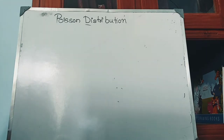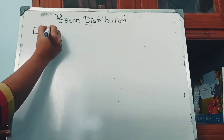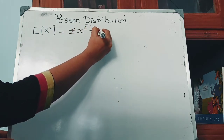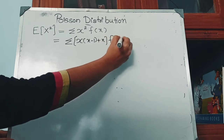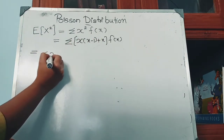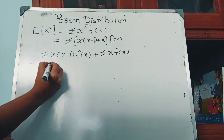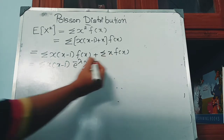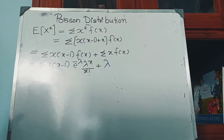Now we will find the variance of the Poisson distribution. We know that variance equals E[X²] − (E[X])². Before finding variance, we find the second order moment E[X²] = sigma of x²·f(x). We write x² as x(x−1) + x for simplicity, so E[X²] = sigma x(x−1)·f(x) + sigma x·f(x). The second term is the mean of the Poisson distribution, which equals λ.